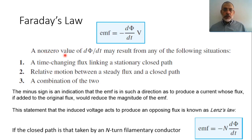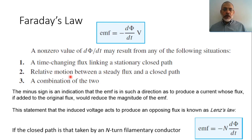A non-zero value of the rate of change of the magnetic flux can be obtained by one of the following situations: either by changing the flux linkage in a stationary closed loop — for example, by moving a magnetic bar inside the closed loop — or by switching on and switching off the nearby circuit. Alternatively, by relative motion, or by a combination of them. So, the magnetic flux can be time-changing, moving, or both.